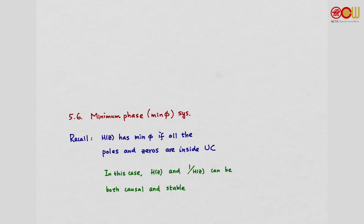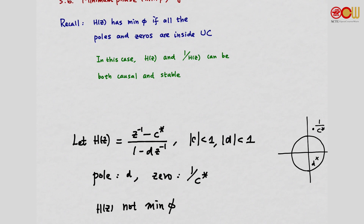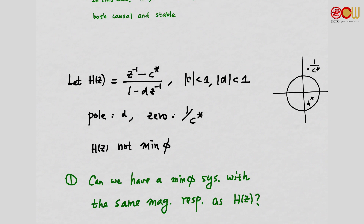Point 6: Minimum phase systems. Recall that a system H is minimum phase if all poles and zeros are inside the unit circle, so both H and its inverse can be causal and stable. Given a system H that is not minimum phase — the pole is inside the unit circle but the zero is not — we would like to address some questions.